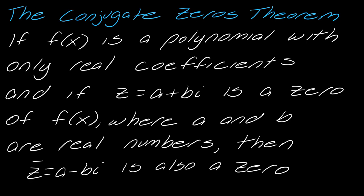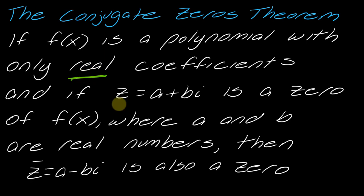The conjugate zeros theorem states: if f(x) is a polynomial with only real coefficients, and z = a + bi is a zero of f(x) where a and b are real numbers, then the conjugate z-bar is also a zero. So if you find one complex zero, you automatically get its conjugate as a zero for free — as long as the polynomial has real coefficients.